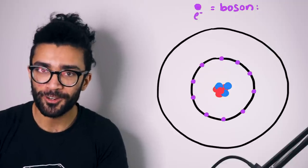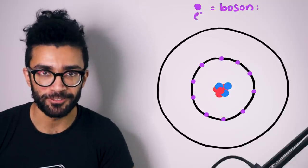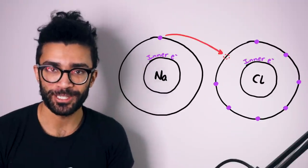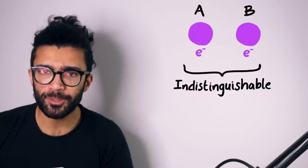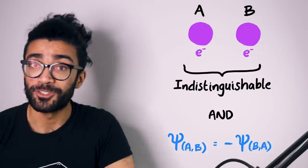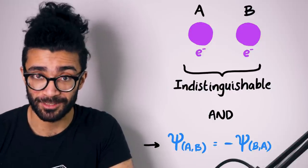If electrons were bosons instead of fermions, they would all be allowed to collapse into the lowest energy level. This would not be good for atomic structure as we know it, because chemistry as we know it would not exist, and therefore biology as we know it would not exist, and perhaps life as we know it would not exist. I find this quite profound: in order for the universe around us to be the way it is, electrons have to be indistinguishable from each other, and very specifically the fermionic kind of indistinguishable. This simple mathematical condition is enough to explain the behaviour of electrons in atoms.